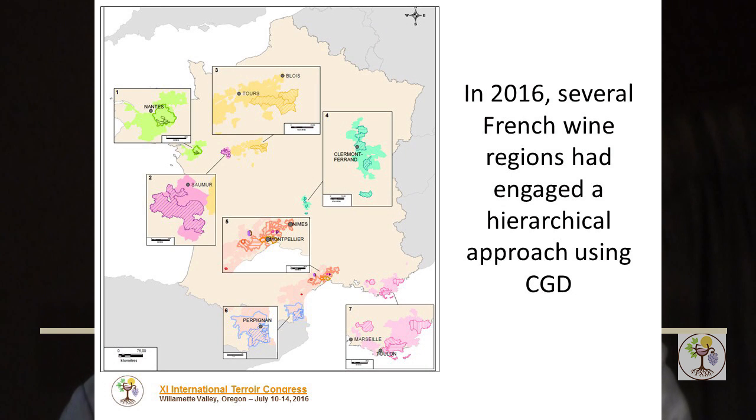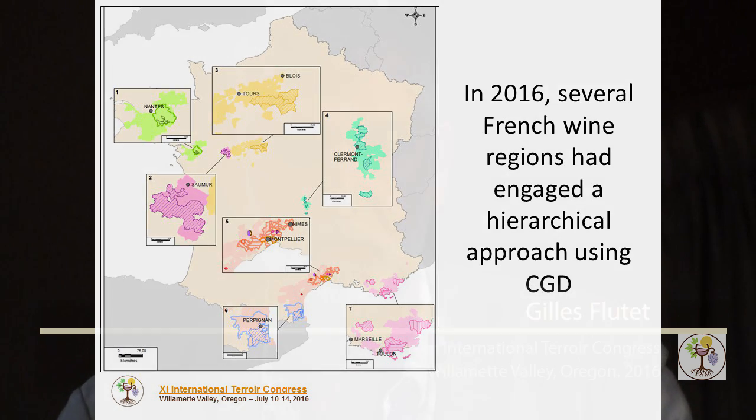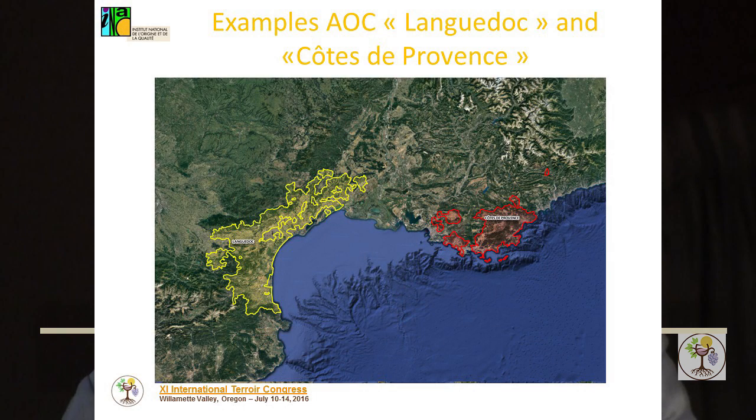In 2016, several French wine regions had engaged a hierarchical approach using CGD: in Val-de-Loire, in Auvergne, in southern France, with Côte-de-Provence and Languedoc. In this presentation, I present two examples of the establishment of CGD systems — AOC Languedoc and AOC Côte-de-Provence.